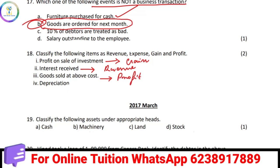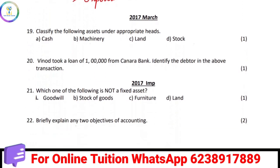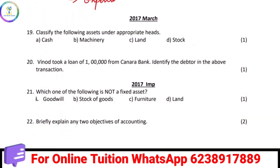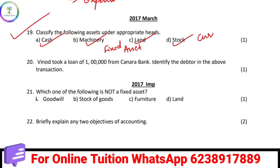Depreciation. The next question is from March 2017. Classify the following assets under the appropriate head. Here is a fixed asset: machinery, land. Cash and stock are current assets.